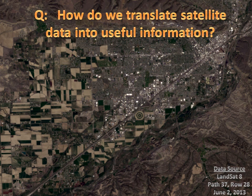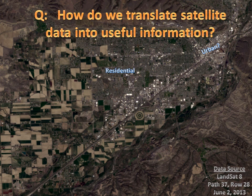Right off the bat, you can likely recognize a few patterns in this data that suggest how land in and around Billings is used. In the northeast corner, you might recognize the shapes, spatial arrangements, tones, and relationships of objects that you might associate with urbanization. Heading west, you might notice patterns suggesting a more residential landscape. Even farther west, the attributes of the image suggest more agricultural land use. Using these visual interpretation techniques to classify each of the more than one million pixels in this image, however, would be incredibly tedious and time consuming.